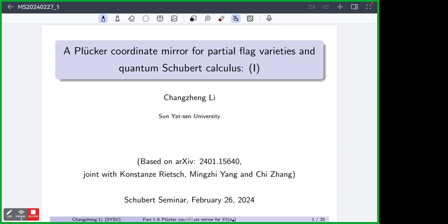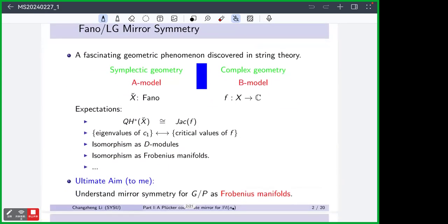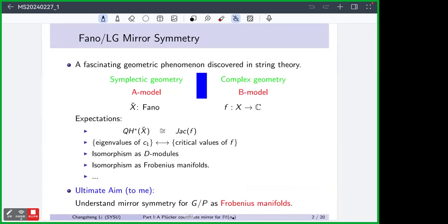In the first part, I will focus more on mirror symmetry part, or more precisely on the B side. And in the second part, I will focus more on quantum Schubert calculus. So once we refer to mirror symmetry, we always say something called A side and something called B side, and the equivalence between both sides.